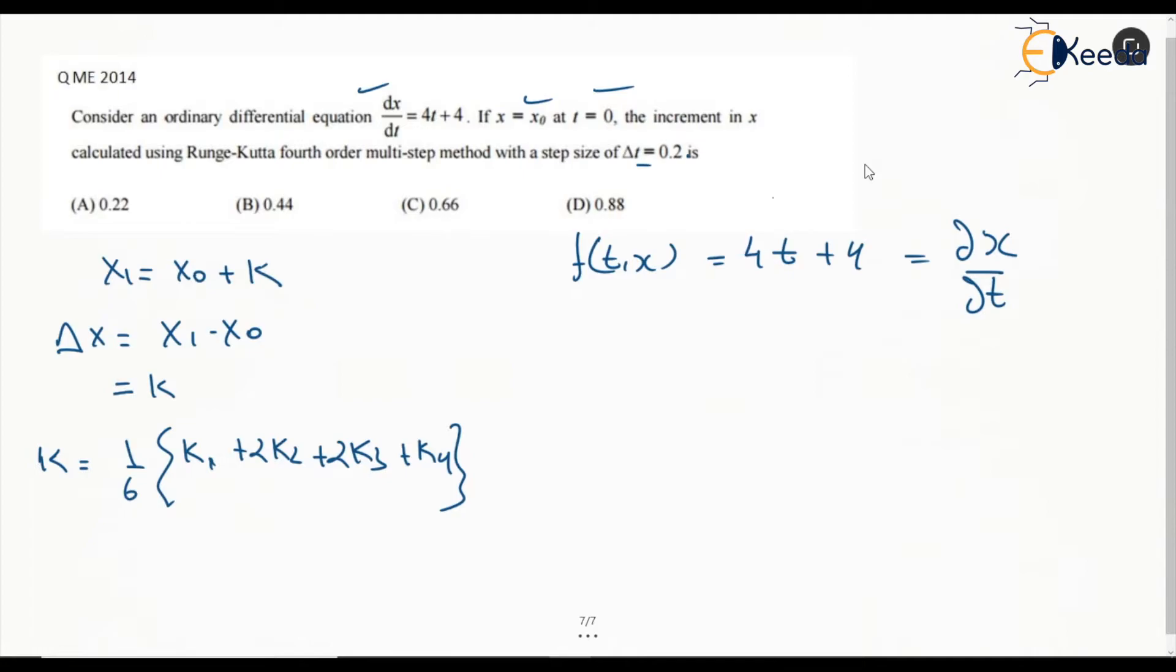Let's find K₁. K₁ is h times the function at t₀ and x₀. The step size is 0.2, so this is 0.2 times the function. Since the function is independent of x, the important thing is t₀. We are starting with t = 0, so it is going to be 4 times 0 plus 4. So this is 0.2 times 4, which is 0.8.